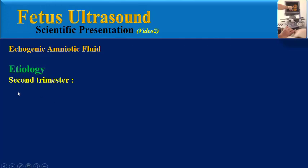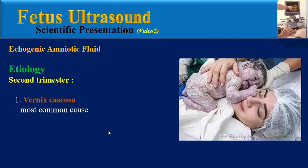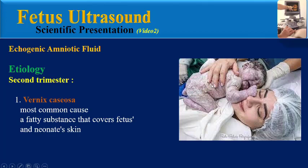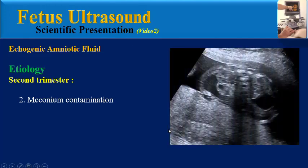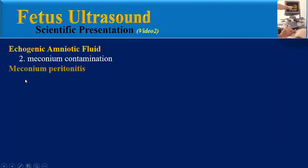In the second trimester there are many causes of echogenic amniotic fluid. The most common cause is vernix caseosa, which is a fatty substance that covers fetal and neonatal skin. Another cause is meconium contamination. This is a good opportunity to have a brief overview of meconium peritonitis ultrasound findings.